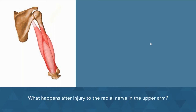Hello and welcome to PT exam prep study topics. Today we're going to be talking about what happens after an injury to the radial nerve in the upper arm. To answer this question we need to know where the injury occurred, whether it was above or below the radial groove.